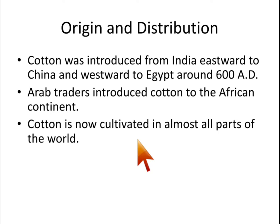Regarding the distribution and origin of this crop, it was introduced from India eastward to China and westward to Egypt around 600 AD, but went under cultivation in those countries as a textile fiber around 1300 to 1400 AD. Arab traders introduced cotton to the African continent, and now this crop plant is cultivated in almost all parts of the world.